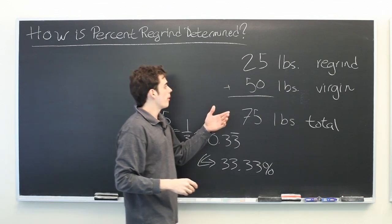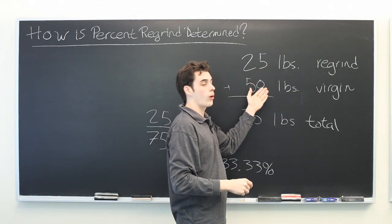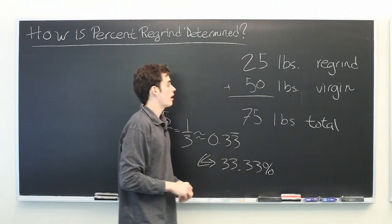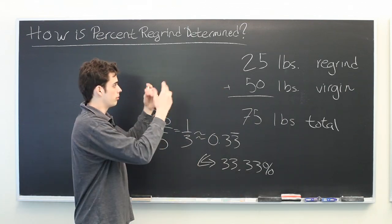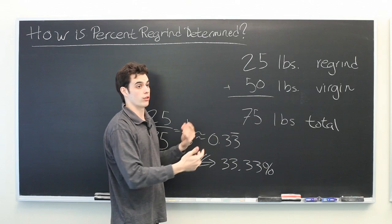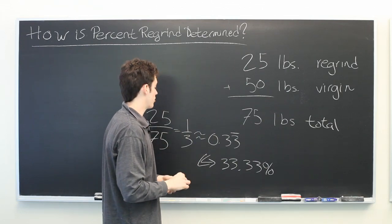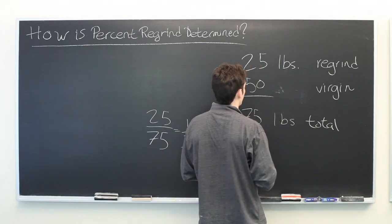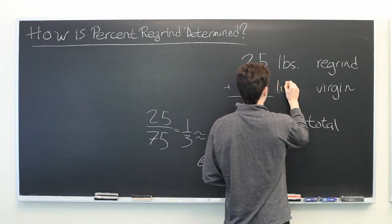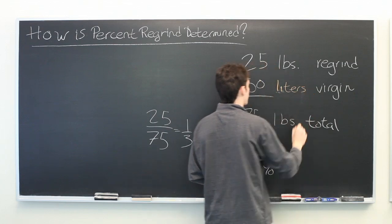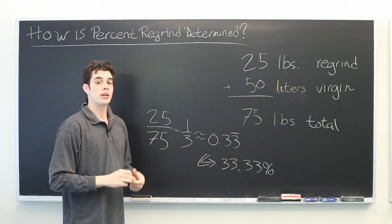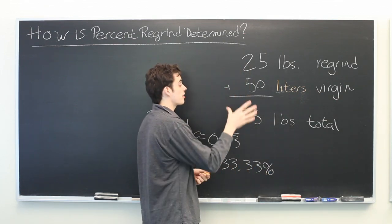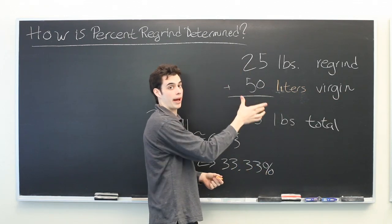As we said before, it's important that the two quantities that you are given, regrind and virgin plastic, are given not only in the same units, but also the same idea of weight versus volume. If, for example, this were changed from pounds to liters, we would need to first know what the density of this material is, and then use that to convert from liters to pounds. From there, we can calculate the percent regrind.